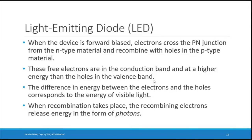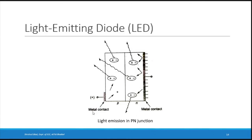When electrons in the conduction band recombine with holes in the valence band, the energy gap is released. In normal semiconductor diodes this energy is heat, but in light emitting diodes it is released as photons — particles of visible light. The energy difference between electrons and holes corresponds to the energy of visible light, and the released photons have a frequency in the visible light spectrum.